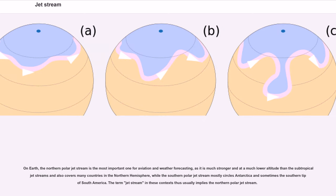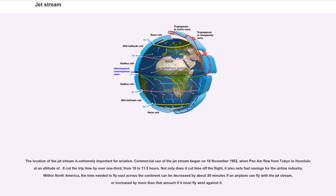On Earth, the northern polar jet stream is the most important one for aviation and weather forecasting, as it is much stronger and at a much lower altitude than the subtropical jet streams and also covers many countries in the northern hemisphere, while the southern polar jet stream mostly circles Antarctica and sometimes the southern tip of South America. The term jet stream in these contexts thus usually implies the northern polar jet stream. The location of the jet stream is extremely important for aviation. Commercial use of the jet stream began on November 18, 1952, when Pan Am flew from Tokyo to Honolulu. It cut the trip time by over one-third, from 18 to 11.5 hours. Not only does it cut time off the flight, it also nets fuel savings for the airline industry. Within North America, the time needed to fly east across the continent can be decreased by about 30 minutes if an airplane can fly with a jet stream, or increased by more than that amount if it must fly west against it.